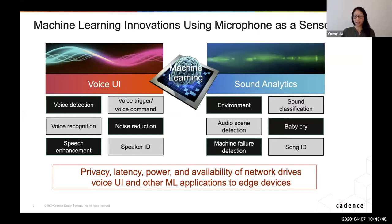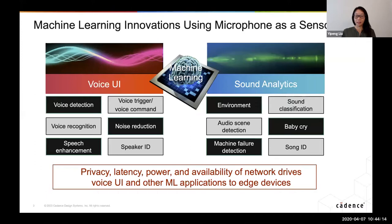One application that's been made popular is the Pixel phone, which gives you song ID when you listen to music. The trend is that these applications initially all started going to the cloud, but privacy, latency, and availability of your network has driven more and more of the processing into edge devices.